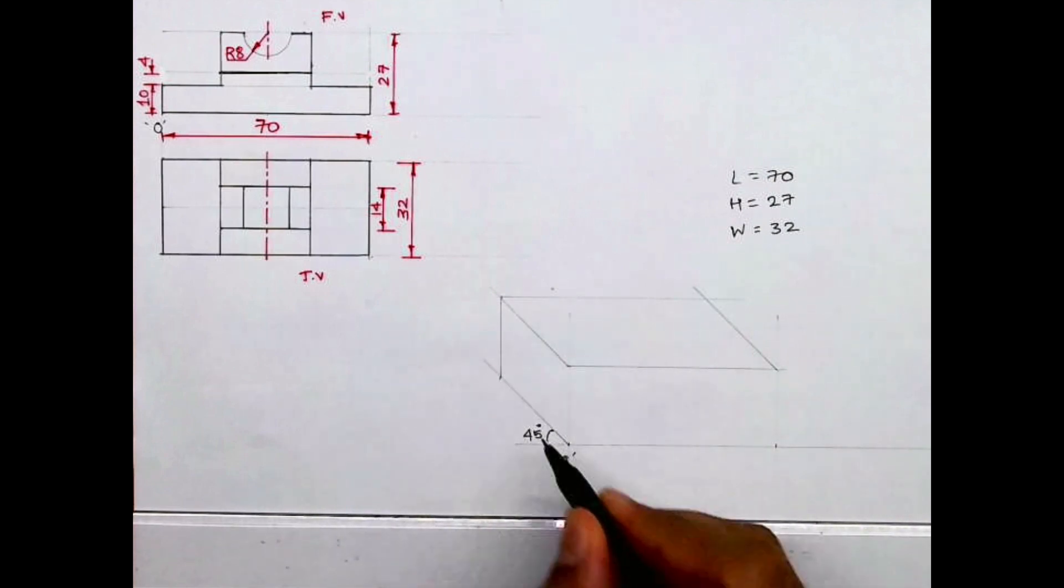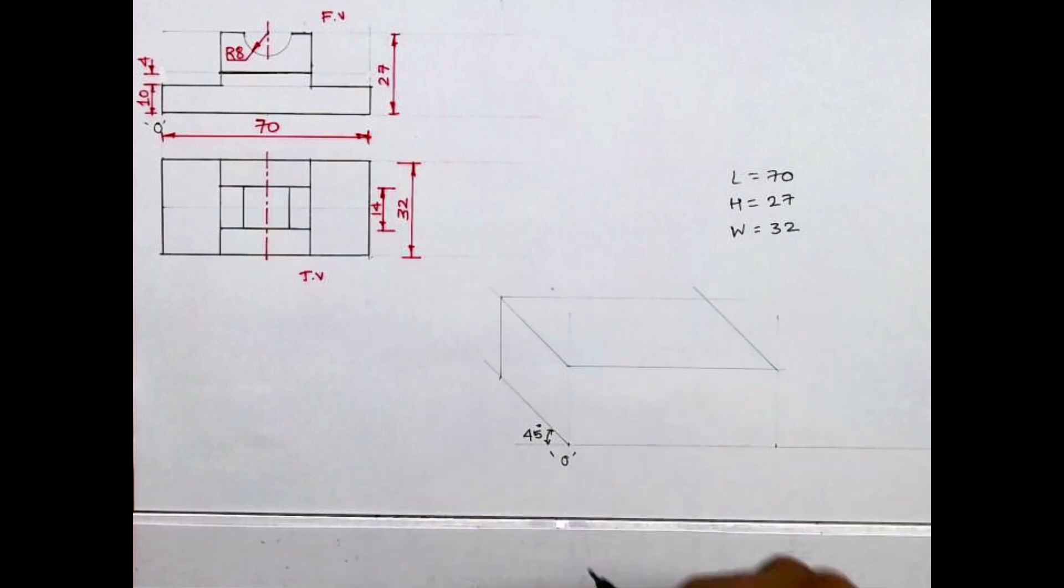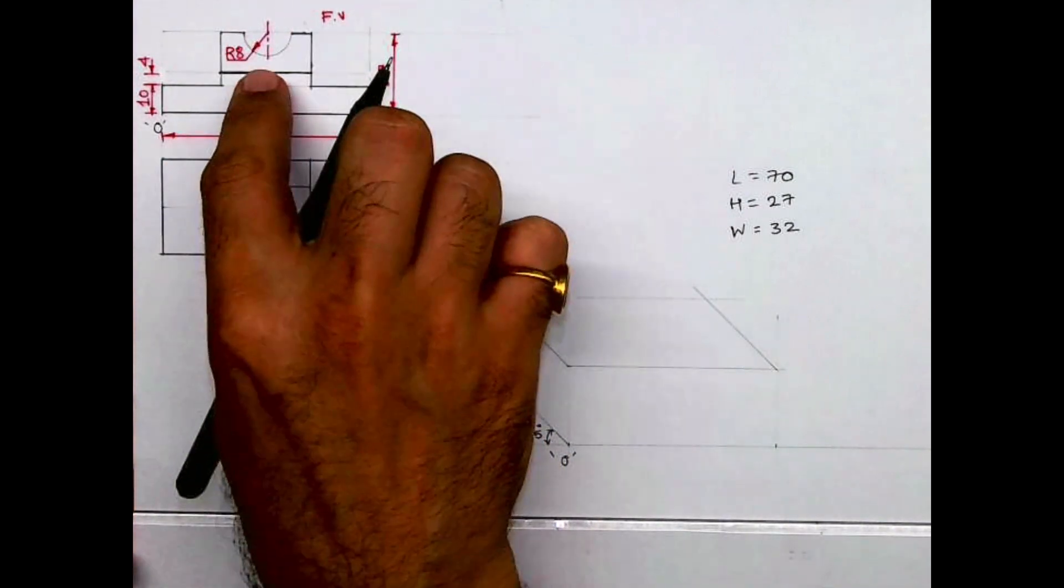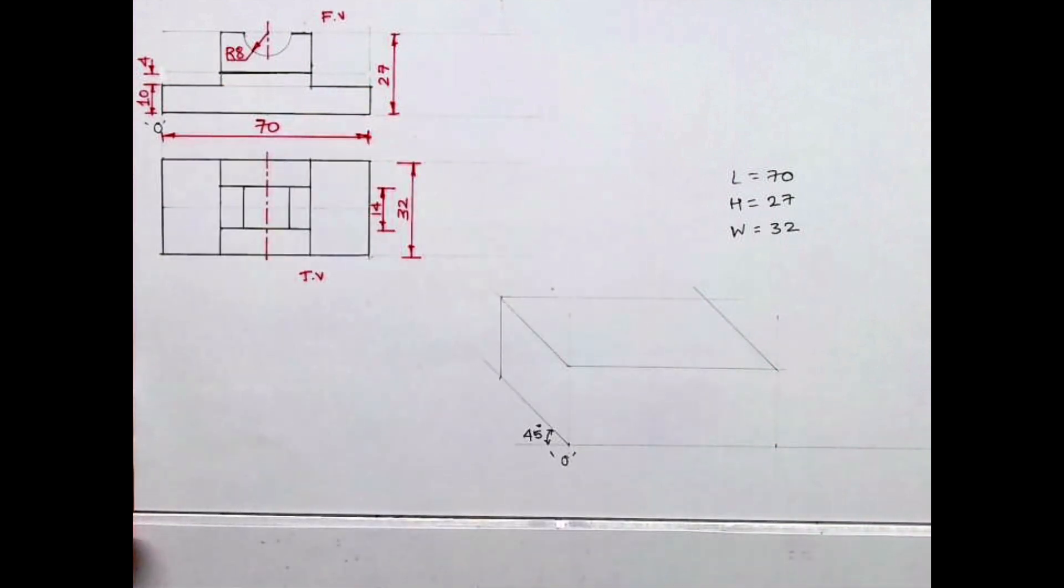So we'll draw width at 45 degrees and we'll draw this box. After drawing this box, we'll see part one and two. So part one is nearer to us, so we'll draw part one first. We'll take height 10.